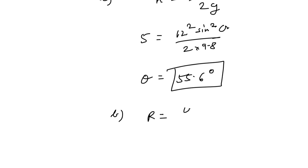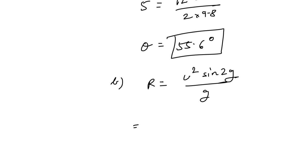u is 12 squared sine of 2 theta, sine 2 times of 55.6 by g which is 9.8.